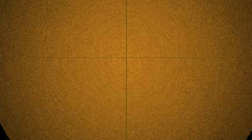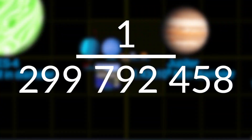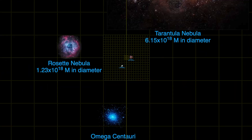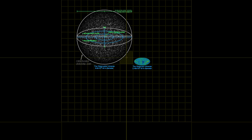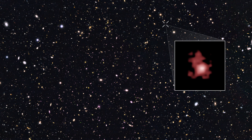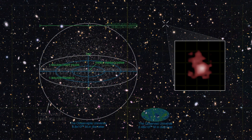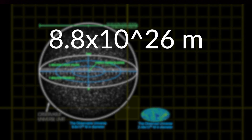The current definition of the meter, beginning in 1983, is the distance that light travels in nearly one three-millionth of a second. Light has been traveling to our position in the cosmos since the beginning of the universe. Light travels at a constant speed of 2.998 times 10 to the 8 meters per second in a vacuum. Some of the most distant galaxies are moving so fast away from the earth that their light has not yet reached our planet. All of the light we can see is known as the observable universe, the diameter of which is estimated to be 8.8 times 10 to the 26 meters.